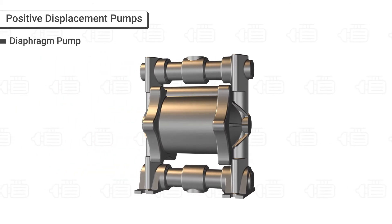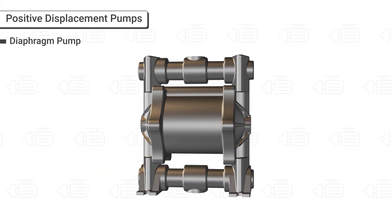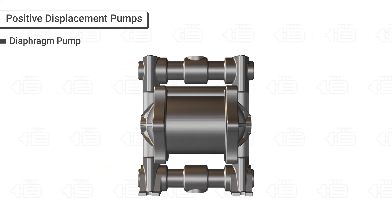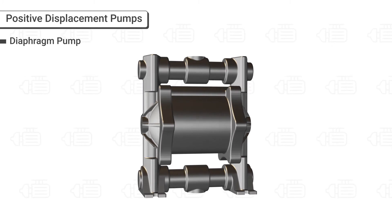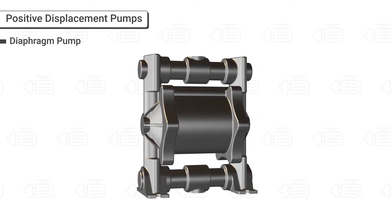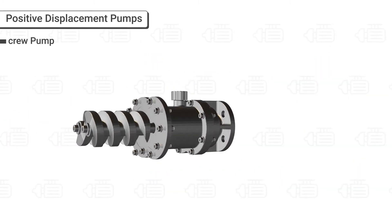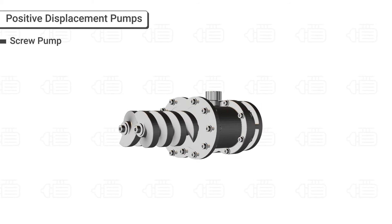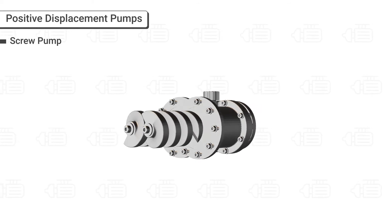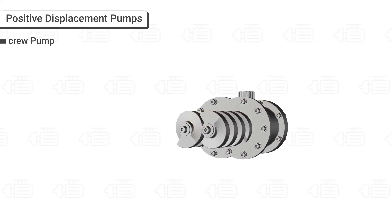The Diaphragm Pump uses a combination of the reciprocating action of a diaphragm and valves on either side of the diaphragm to pump a fluid. The Screw Pump uses one or several screws to move the fluid across its screw axis.